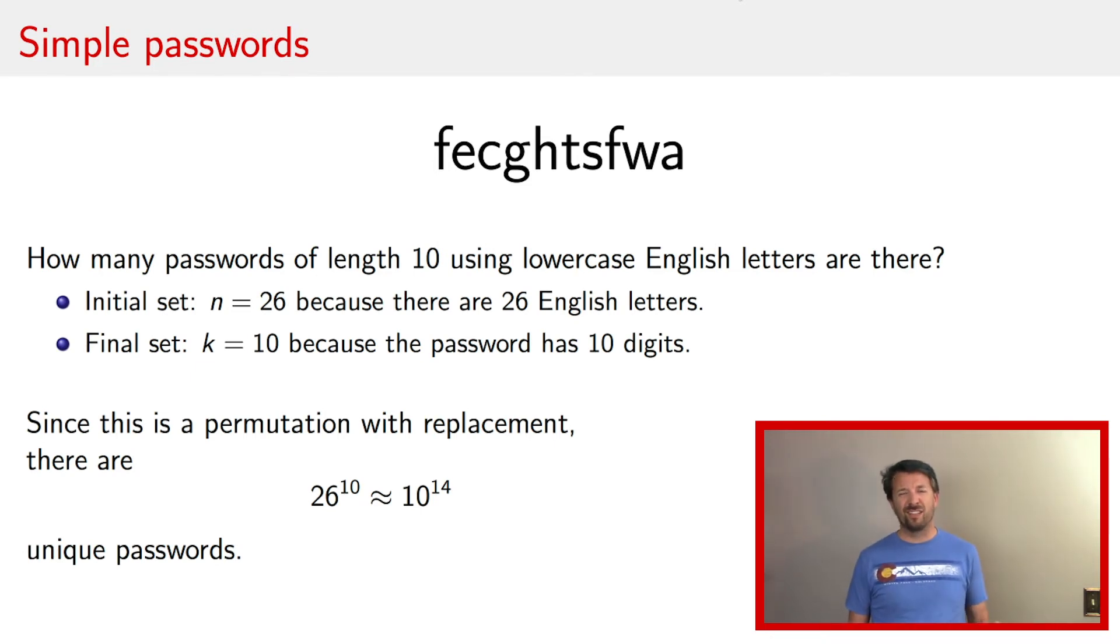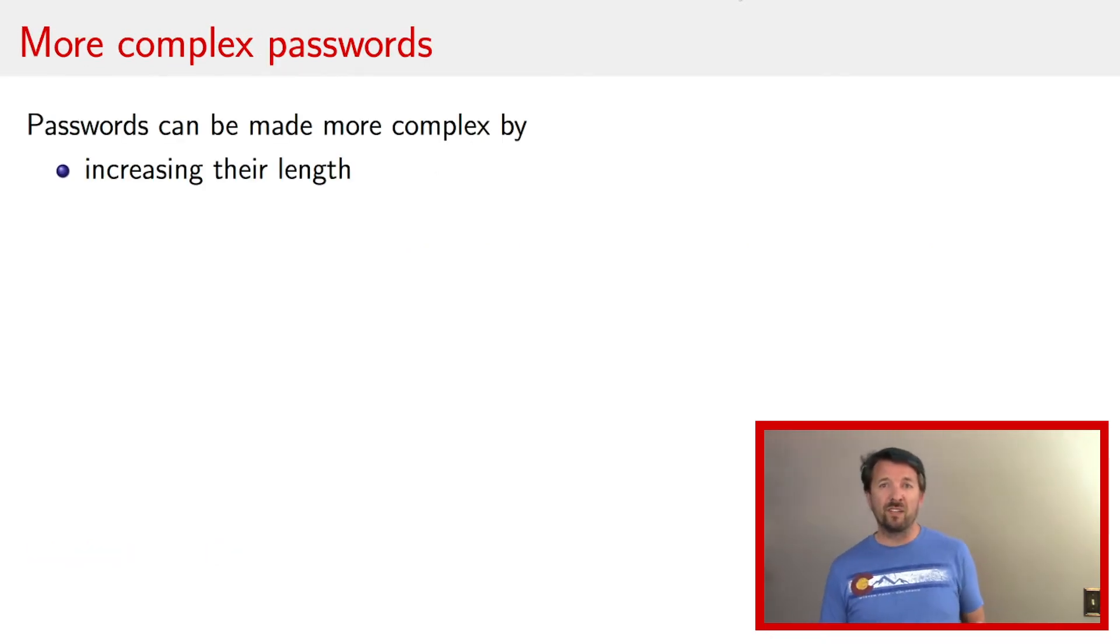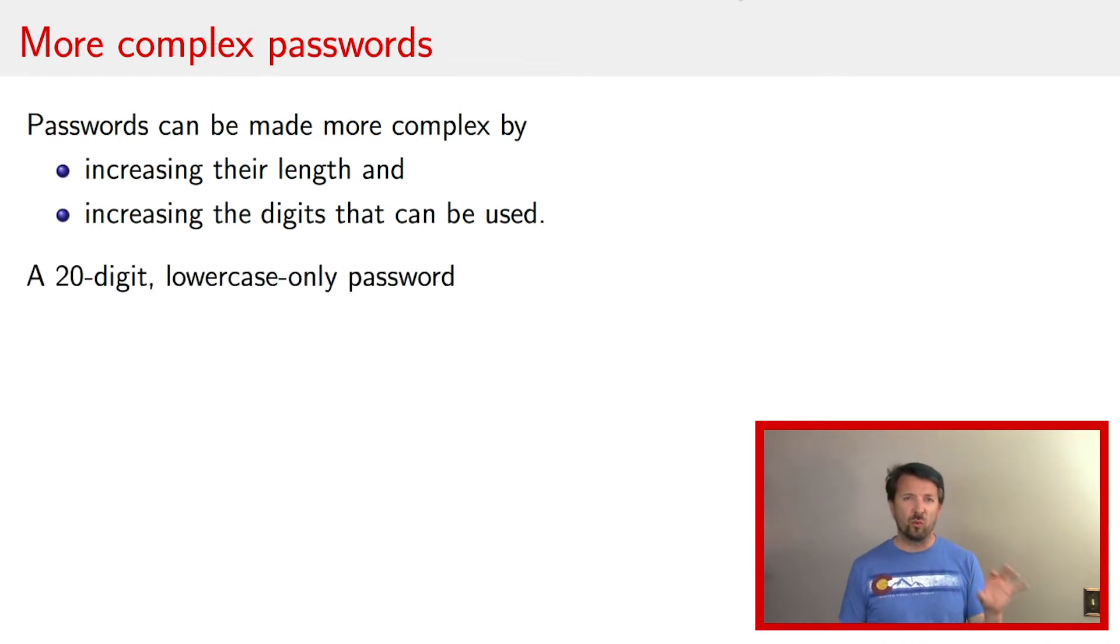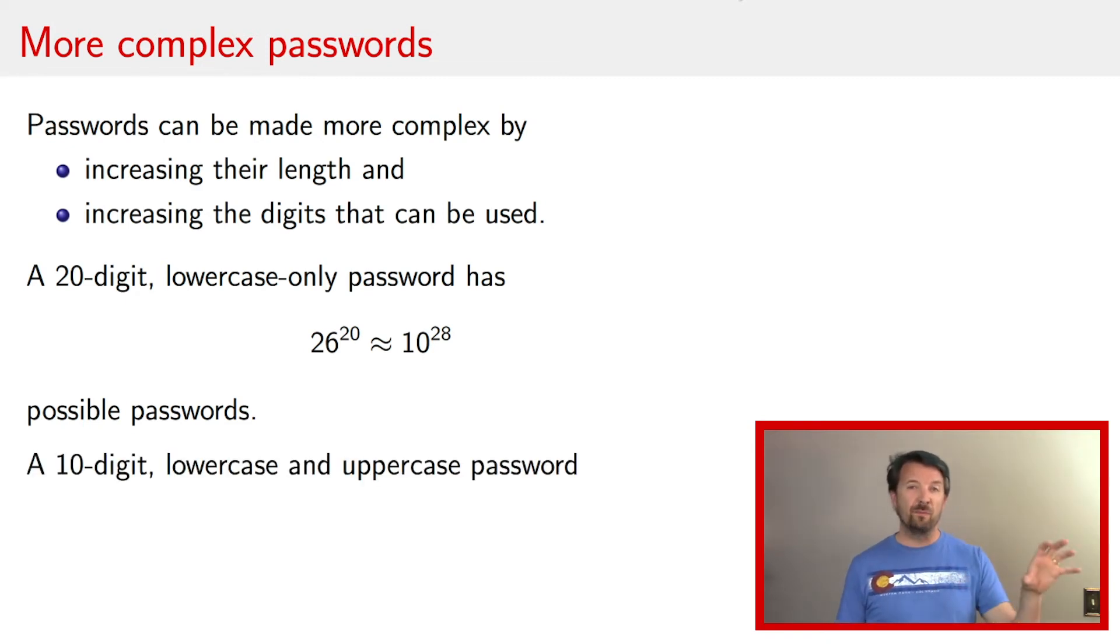Now, most password policies are a little bit more complicated than this. In particular, they make it more complicated by one, allowing you to increase the length, and number two, increasing the number of digits that can be used. So let's look at these two quickly. If we have a 20 digit, but still only lowercase password, then we have 26 to the 20th power, or about 10 to the 28th unique passwords under this new policy. If instead we keep the same length, so it's still 10 digits, but now we allow lowercase and uppercase letters, we now have 52 raised to the 10th power, or about 10 to the 17th unique passwords.